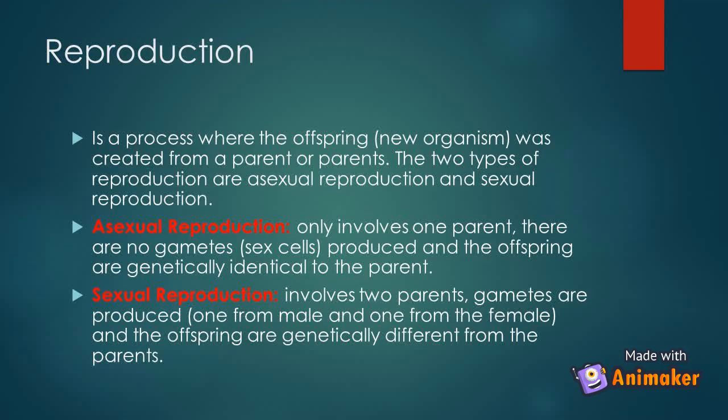Asexual reproduction only involves one parent. There are no gametes or sex cells produced and the offspring are genetically identical to the parent. Sexual reproduction involves two parents. Gametes are produced — one from the male and one from the female — and the offspring are genetically different from the parents.